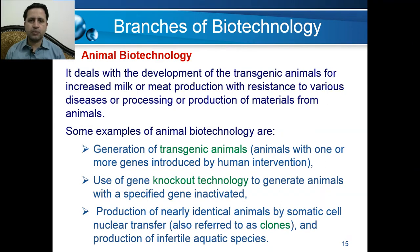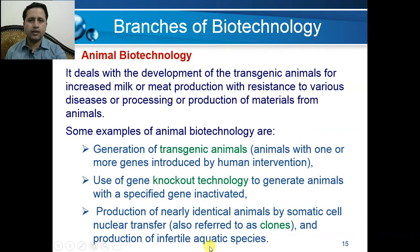Some examples of animal biotechnology include transgenic animal production, knockout technology to generate animals, and cloning techniques for animals. This cloning technique applies specifically to animals because this is animal biotechnology.